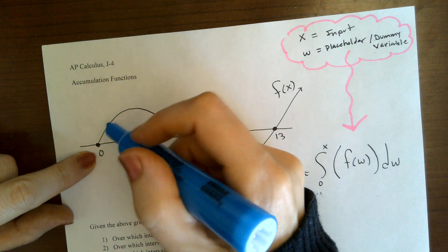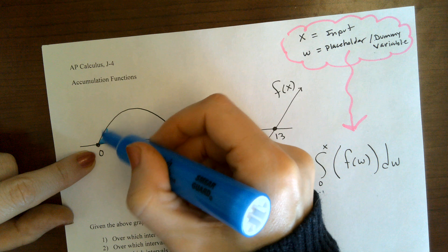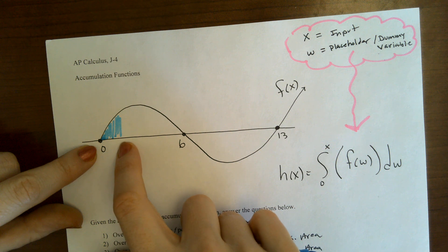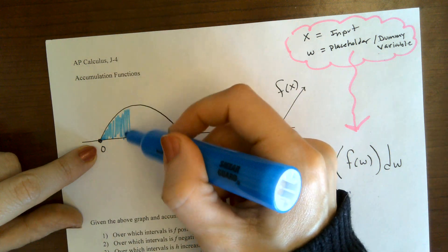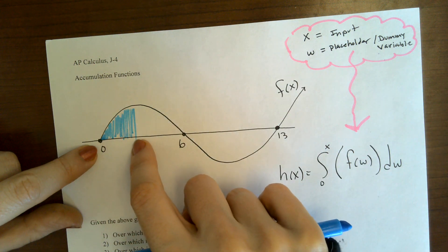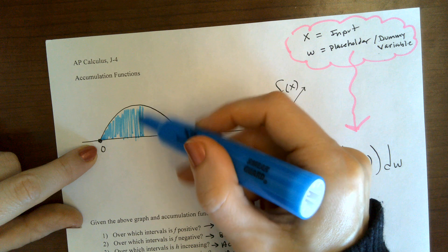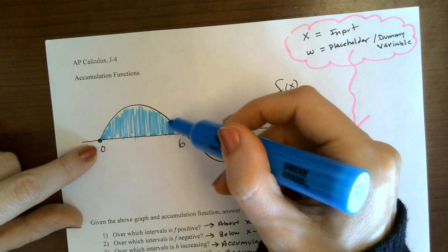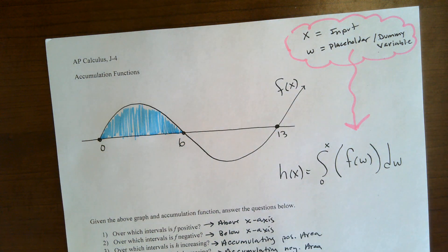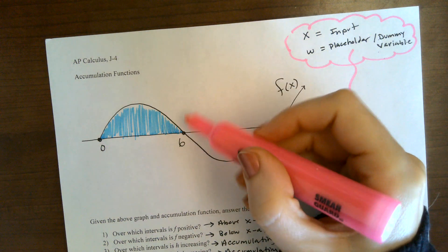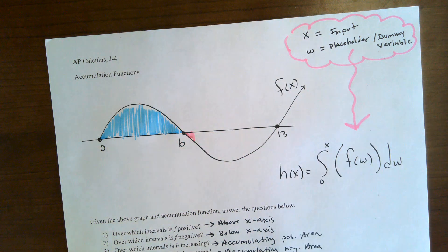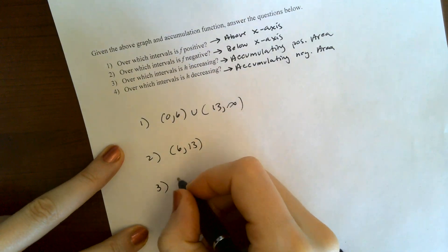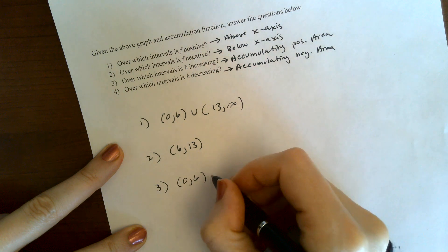So we're starting at 0 and we begin accumulating positive area. So on this interval, h is increasing. We're accumulating more and more positive area, so h is still increasing — still increasing because we're still adding on positive area. But then at 6, we start to add on negative area. So it's from 0 to 6 that h is accumulating positive area, and therefore increasing.